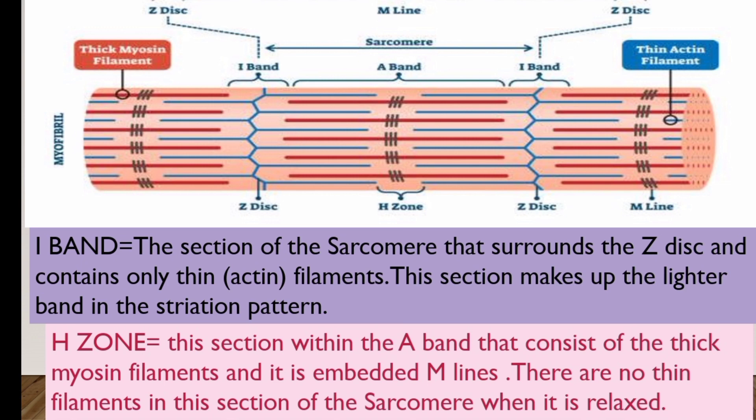The I-band is the lighter band of the striation pattern. The I-band is the section of the sarcomere that surrounds the Z-disc and contains only thin actin filaments. This section makes up the lighter band in the striation pattern.